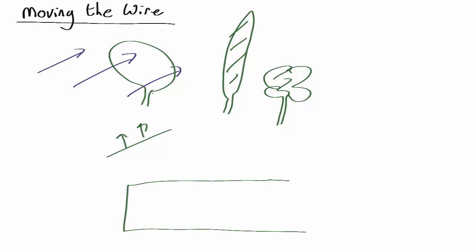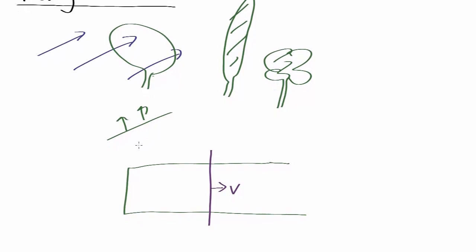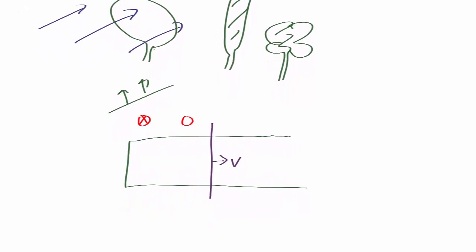And we have a moving bar that rests on top of it, sliding to the side at some velocity v. And let's further imagine we have a magnetic field going into the screen of some strength B.